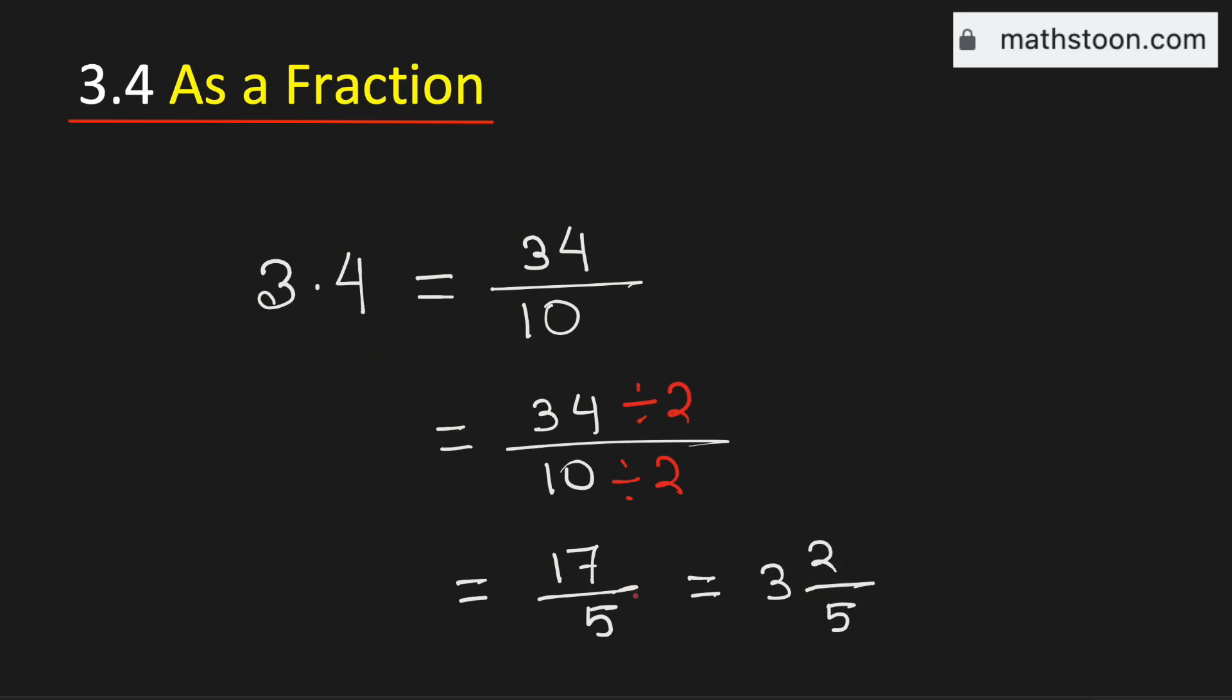Therefore, 3.4 as a mixed number is equal to 3 and 2 fifth. And this is our final answer.